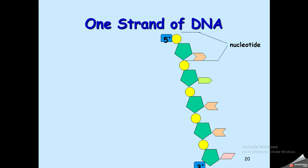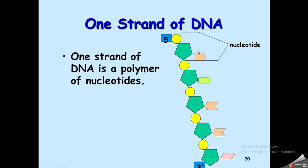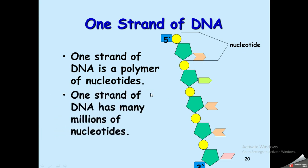DNA has two strands that twist around each other to form a double helix. Each single strand runs from five-prime to three-prime end.